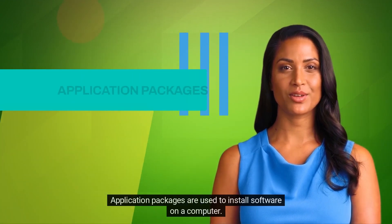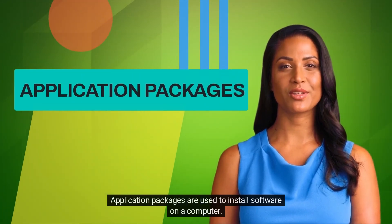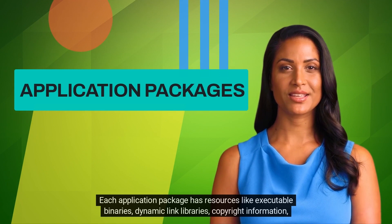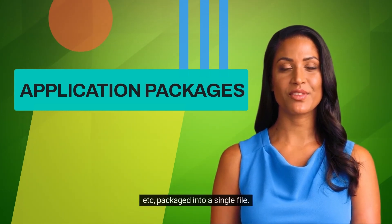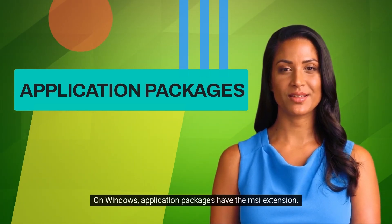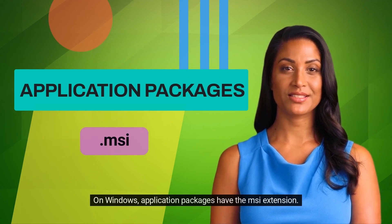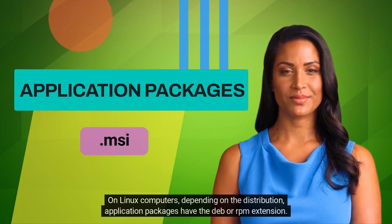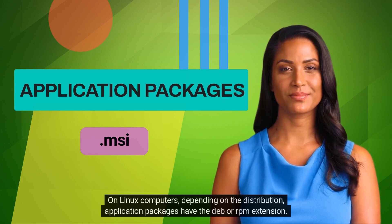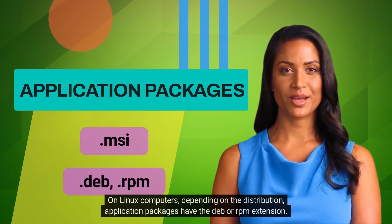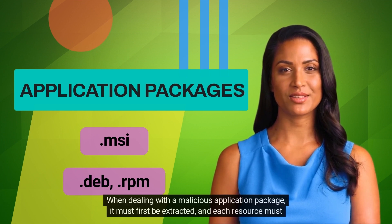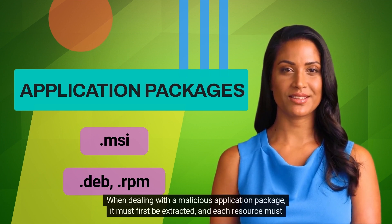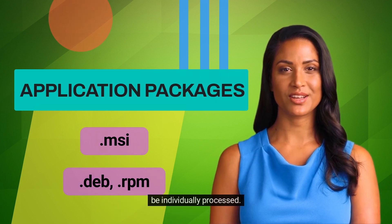Application packages are used to install software on a computer. Each application package has resources like executable binaries, dynamic link libraries, copyright information, etc., packaged into a single file. On Windows, application packages have the MSI extension. On Linux computers, depending on the distribution, application packages have the DEB or RPM extension. When dealing with a malicious application package, it must first be extracted, and each resource must be individually processed.